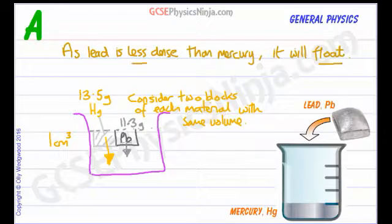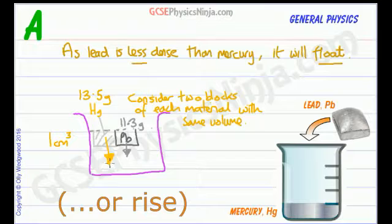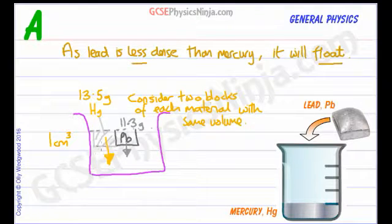And that's why lead floats in mercury, and that's why any object which is less dense than the surrounding fluid will float, because the surrounding fluid wins the race to the bottom of the container because there's more weight force acting on it than there is on the object. I hope that makes some sense.